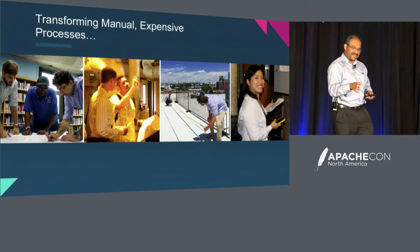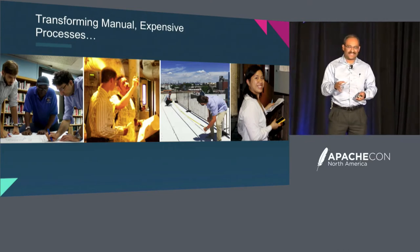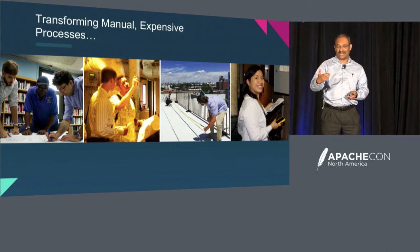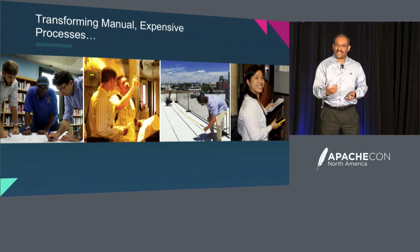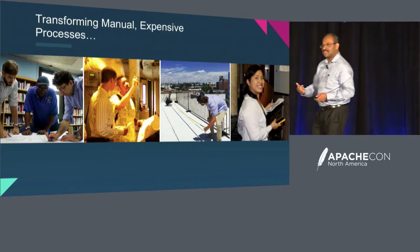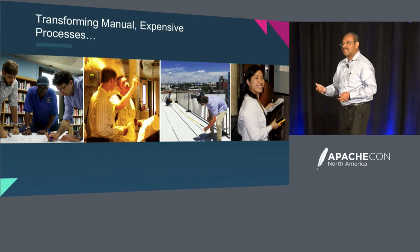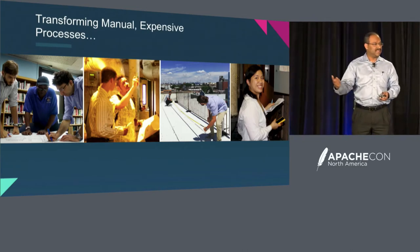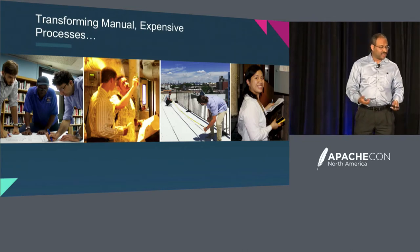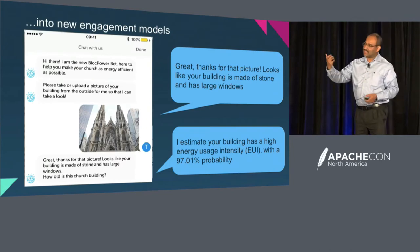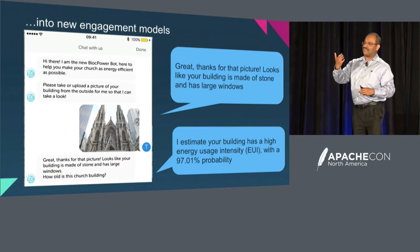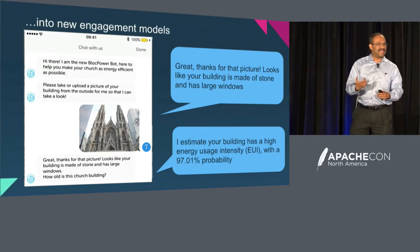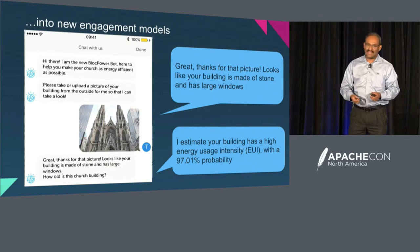The way they did this — and this is an actual thing that they have rolled out — is very interesting. Instead of sending engineers, they make a mobile app available to the building superintendent. The building superintendent has this app on their phone, and instead of asking and answering a bunch of questions, you start the app.